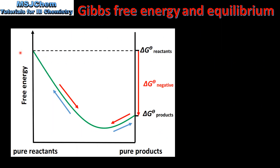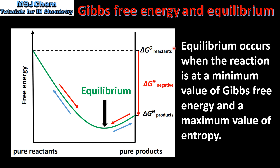We'll start by looking at how the free energy of a spontaneous reaction changes as it proceeds from pure reactants to pure products. The free energy of a spontaneous reaction decreases until it reaches a minimum value. At the minimum value of Gibbs free energy the reaction is at equilibrium, which also corresponds to a maximum value of entropy.